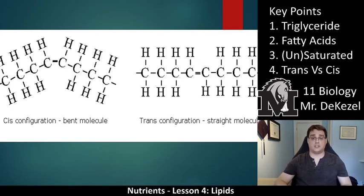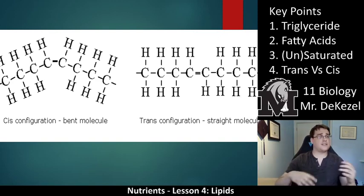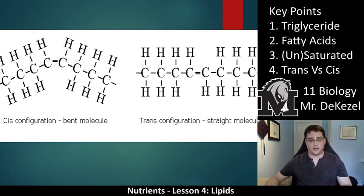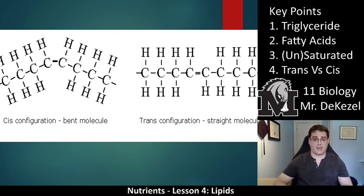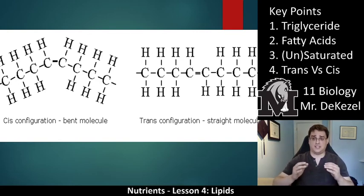To summarize: we look at a triglyceride and its fatty acids — are they saturated or unsaturated? Saturated is bad. If unsaturated, we take it a step further: if they are trans fats, that is also not good. If they are cis fats, that is a good type of fat — the bent type. The reason it's good is because it's bent, making it less likely to stack up and clog your arteries.